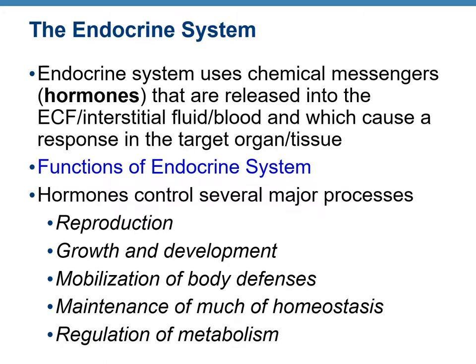The endocrine system regulates the activity of other organs by using special messengers, which are hormones. The hormones are released into the surrounding medium because endocrine glands are ductless. So the hormones go into the interstitial fluid and from there go to blood, causing a response in the target organ or tissue.